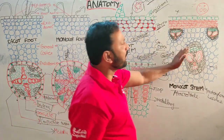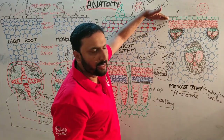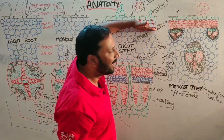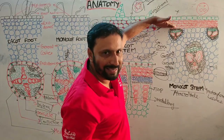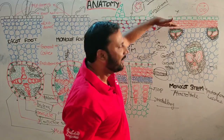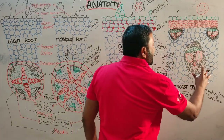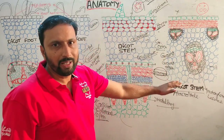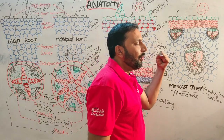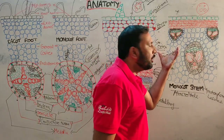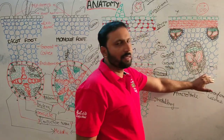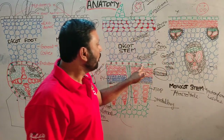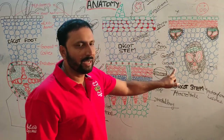In monocot stem, the epidermis is the same, but the hypodermis is sclerenchyma, unlike the collenchyma in dicot stem. There is no differentiation into general cortex and endodermis — only ground tissue made up of parenchyma cells is present. Endodermis is absent.